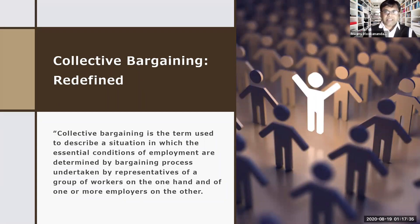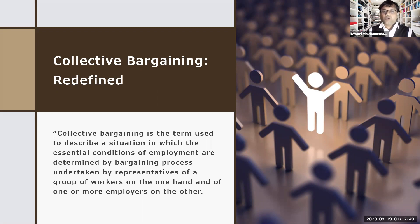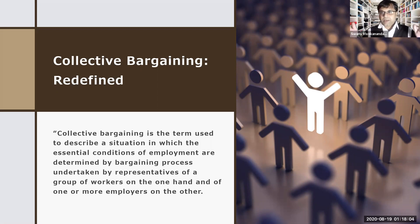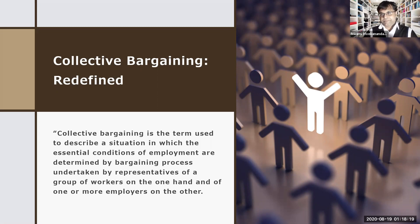Collective bargaining is the term used to describe a situation in which the essential conditions of employment are determined by a bargaining process undertaken by representatives of a group of workers on one hand, and one or more employers on the other. Both parties sit together, discuss important issues related to working conditions, reach a consensus, sign the agreement, and are bound by those rules for a stipulated period of time.